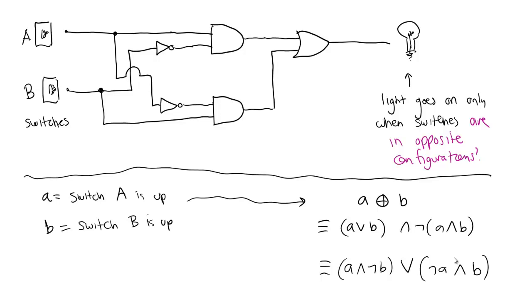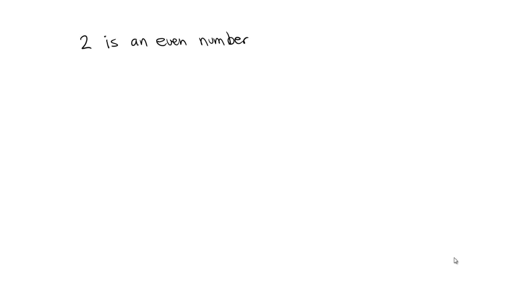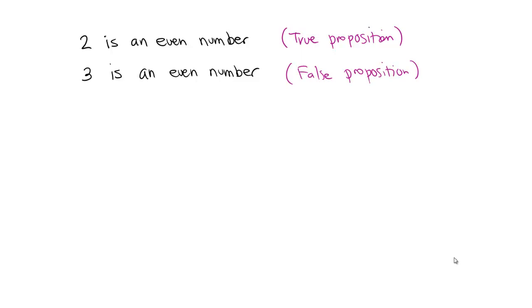Let's tuck this away and start talking about predicates and quantifiers. To do that, I'll go back and focus on propositions. '2 is an even number' is a proposition — a declarative statement about the number 2, which happens to be true. '3 is an even number' is also a proposition, but a false one. However, 'x is an even number' is not a proposition — I can't assign a truth value to it because the answer depends on what x is.